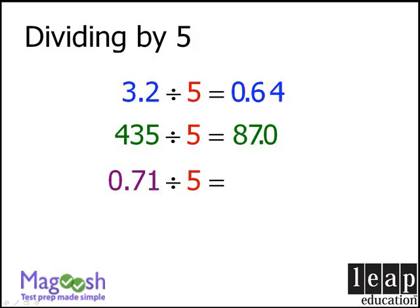One last example. First, we'll take our dividend of 0.71 and double it to get 1.42. And now we'll take our decimal point and move it one space to the left to get 0.142.